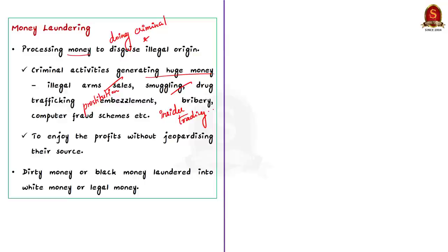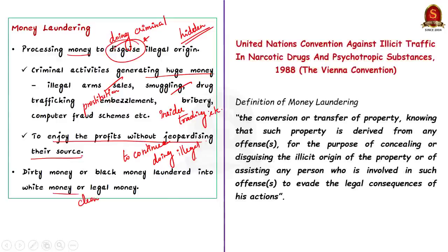Through money laundering, the origin of such money is disguised. That is, the fact that such money is obtained from a criminal activity is hidden. It is done so that the criminal can enjoy the profits from a crime without jeopardizing their source. Here, the criminal money that is the dirty money or black money is laundered through a process and it is converted into white money, which is otherwise called clean money or legal money. I have given here the definition of money laundering as per the Vienna Convention of 1988.